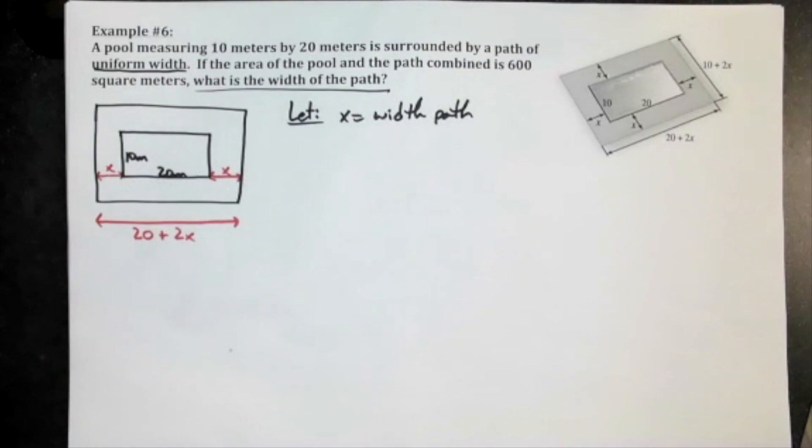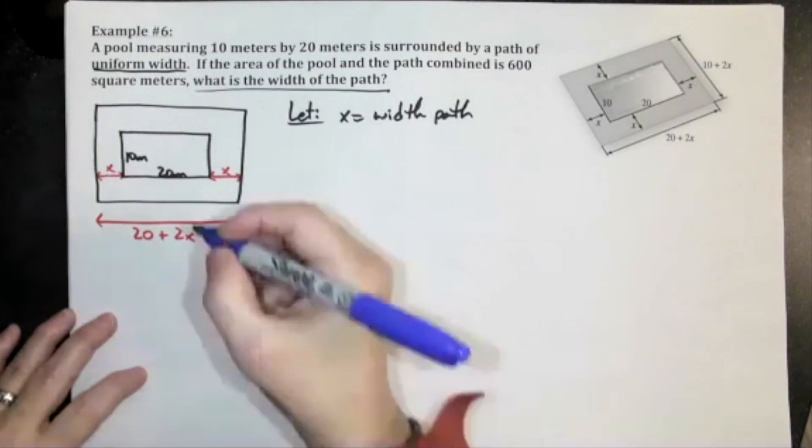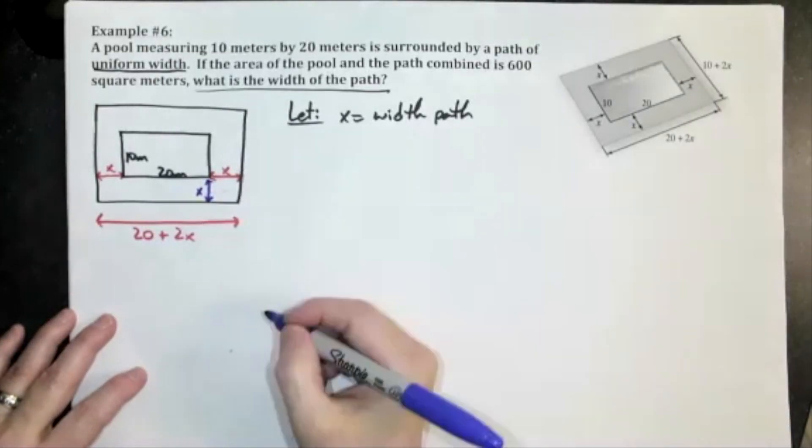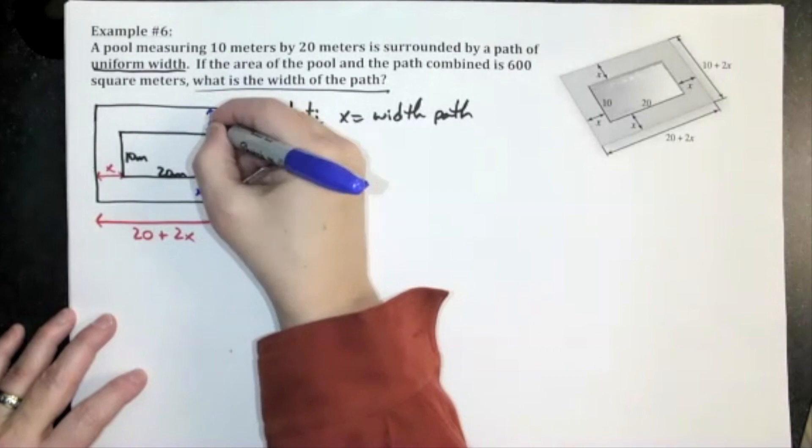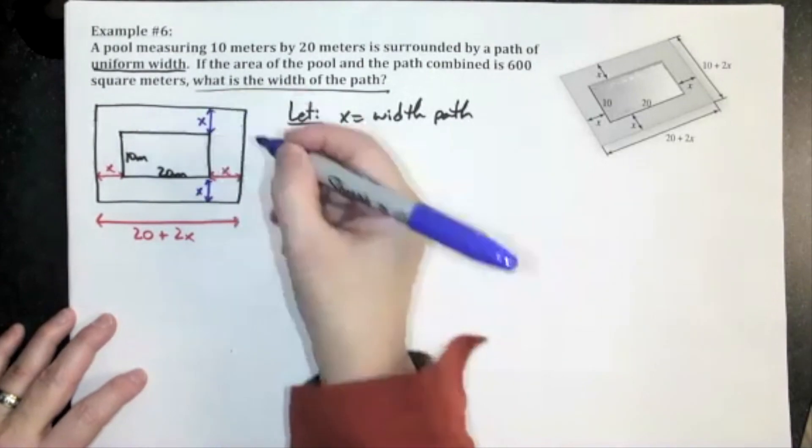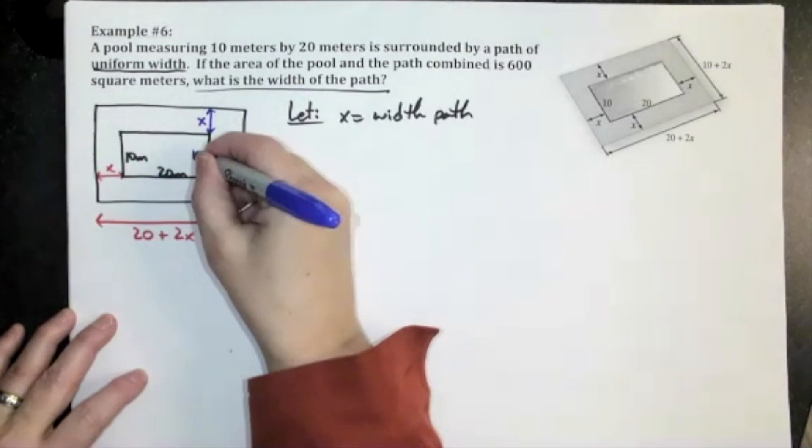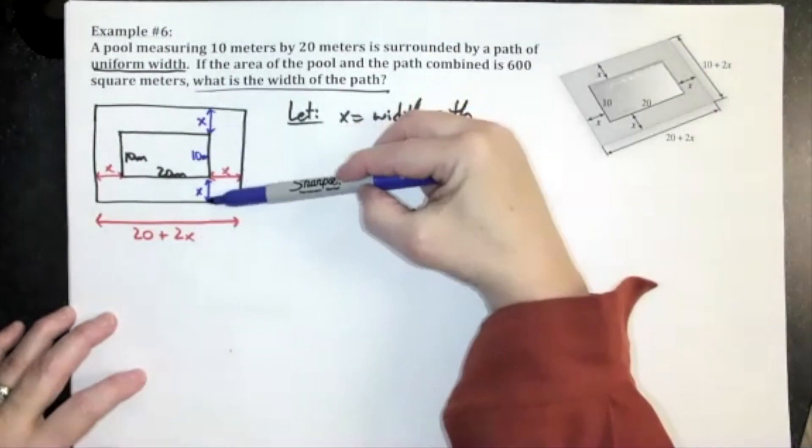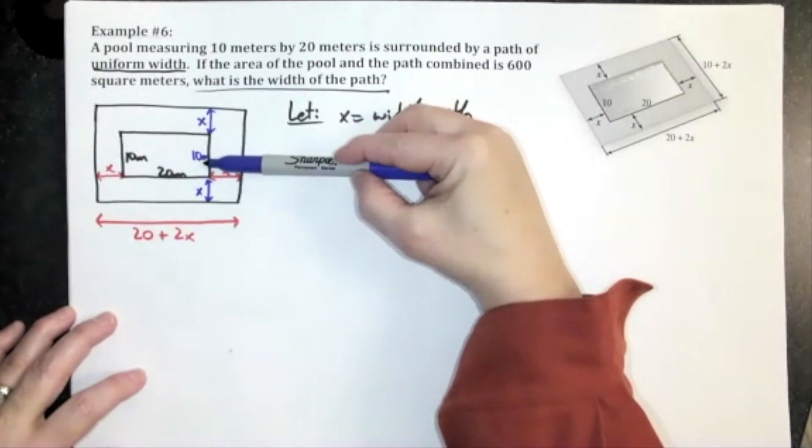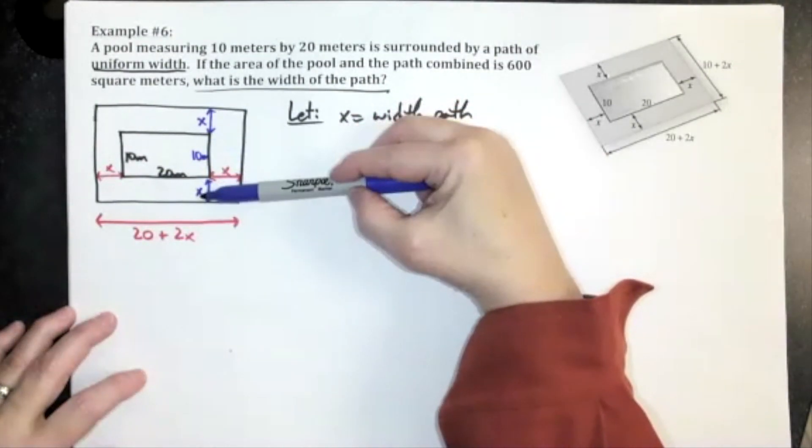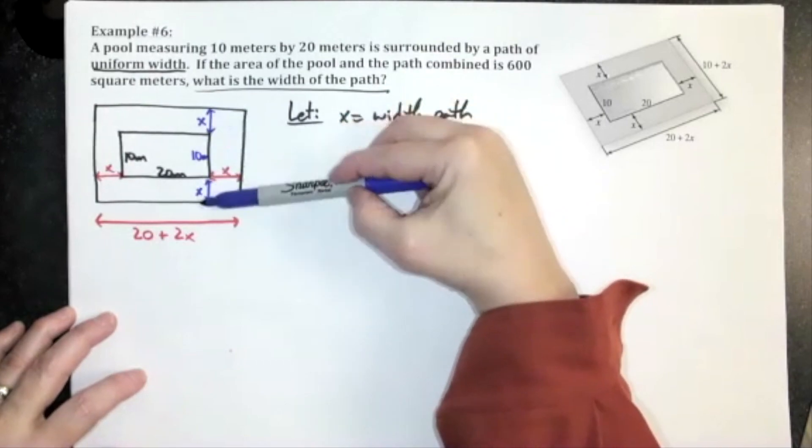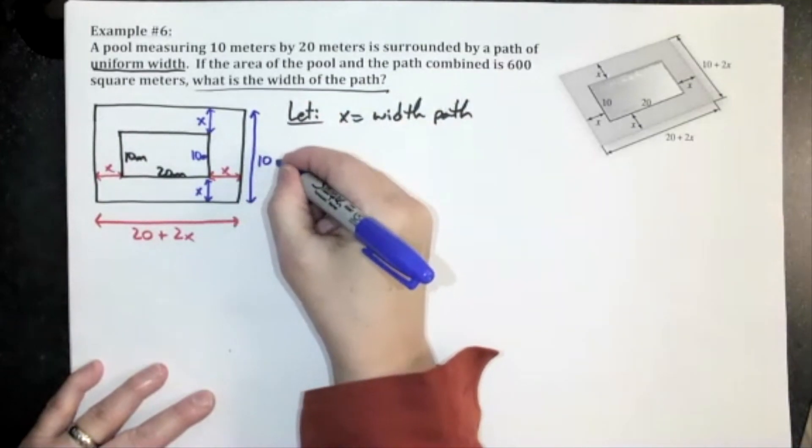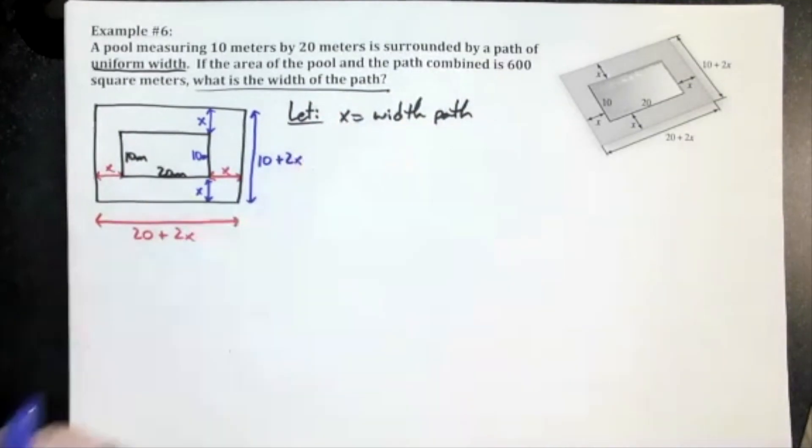Now I've got to have a uniform path all the way around, right? So from here to here is x, the distance from here to here is also x. My 10 is over here, I'm going to rewrite it over here just so we can see it, it's a rectangle. So the distance here, 10 plus x plus x. So going straight up and down, the entire distance of this side is 10 plus 2x.